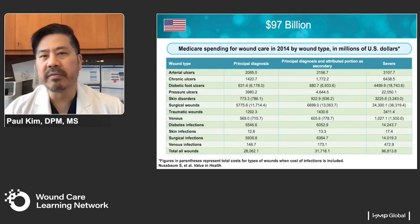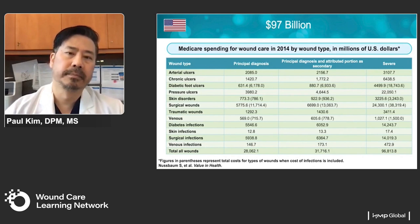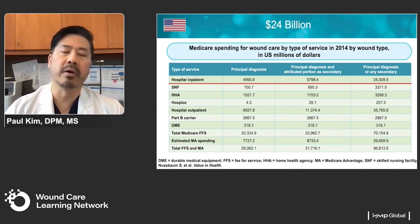When we look at the U.S. — these are 2014 numbers — we spent about $97 billion in Medicare funding, just Medicare, on wound and wound-related complications. The bulk of that cost is on the inpatient side, about $24 billion spent inpatient.